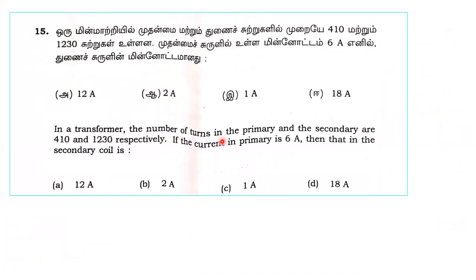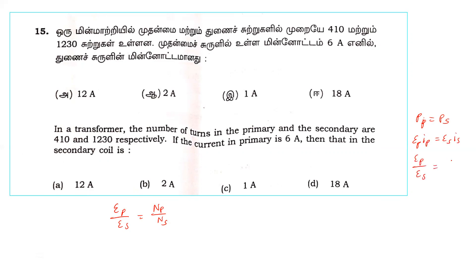Next question: the number of turns in the primary and secondary of a transformer are 410 and 1230 respectively. If current in the primary is 6 A, find the current in the secondary. Using the relation: current in secondary over current in primary equals turns in primary over turns in secondary, i.e., I_s/I_p = N_p/N_s.